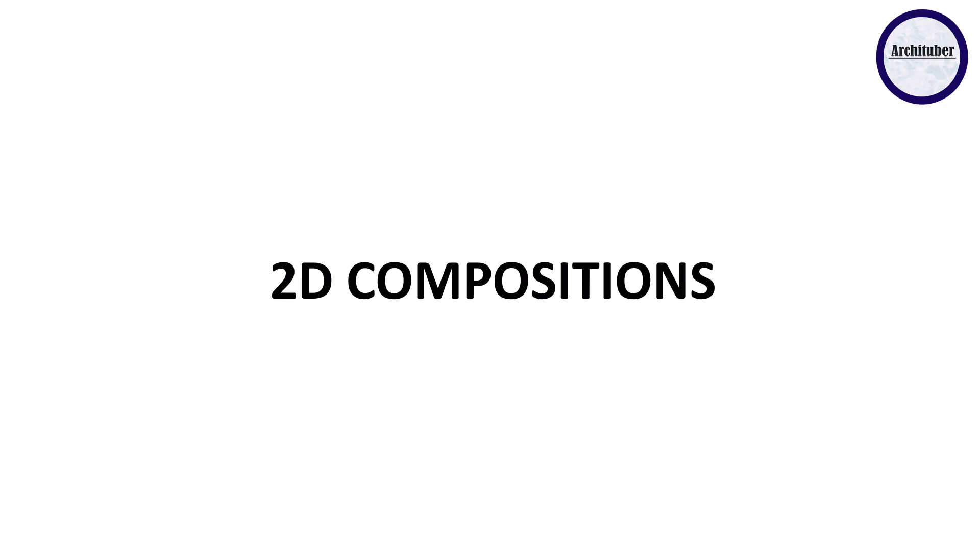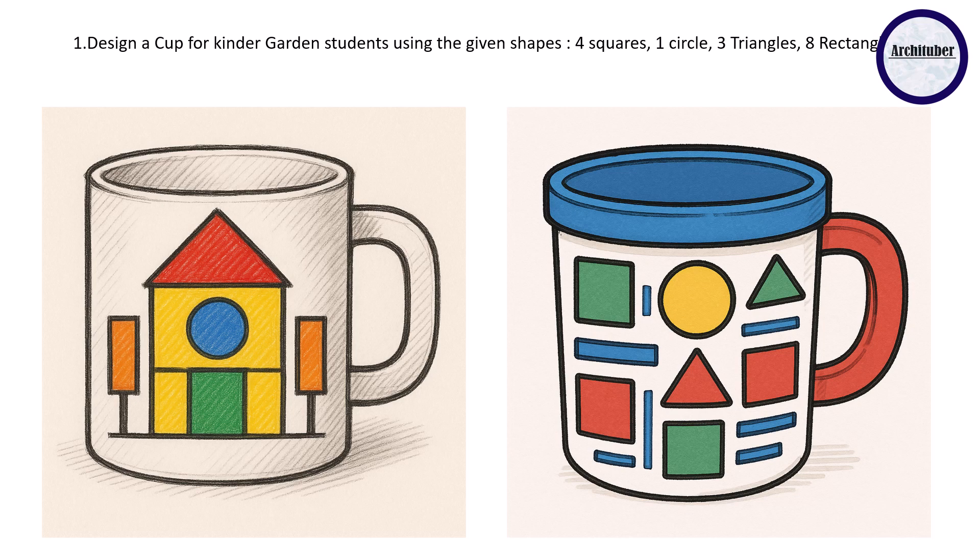Let's discuss design a cup for kindergarten students using the given shapes: four squares, one circle, three triangles, and eight rectangles. If we discuss the first composition, they've done a very good job. They've made a 2D composition which has a house sort of structure going on and it's giving a very colorful situation which is very good for a kindergarten student.